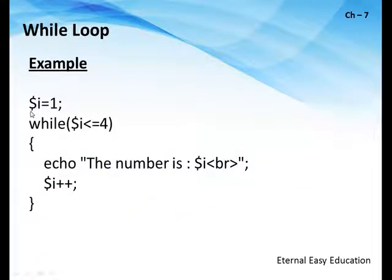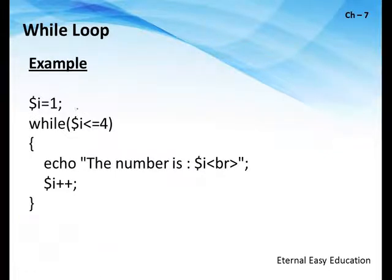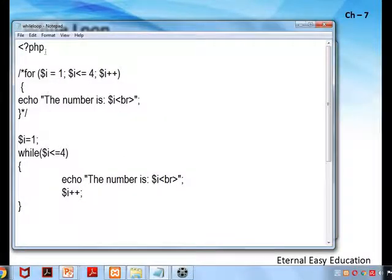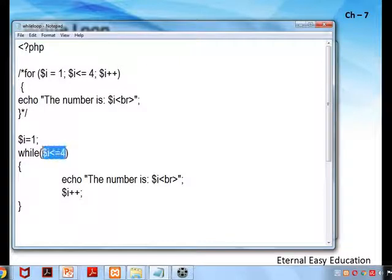See the example: the counter is initialized on the first line — i value is 1. Then while(i <= 4): after initialization, this checks the condition. If the condition is true it executes; after the statement it checks the condition again. If true it executes, then increments. It keeps repeating like this. In the while loop, for loop has three segments — same thing here: initialization, condition, and increment — only the syntax arrangement changes.